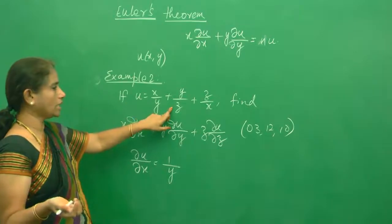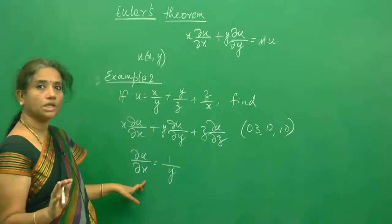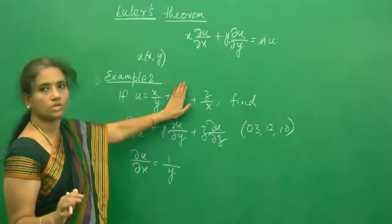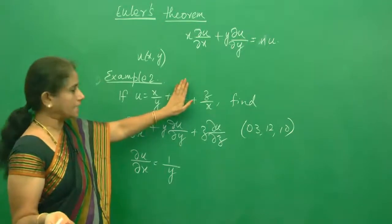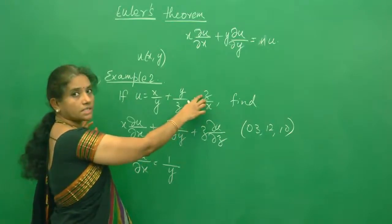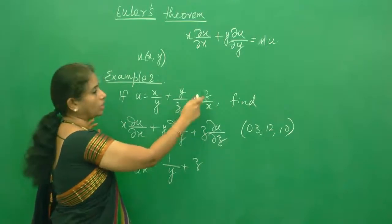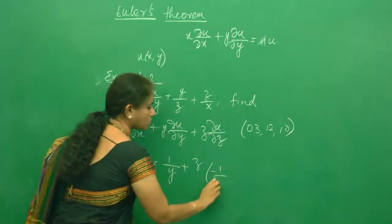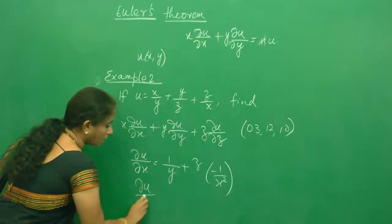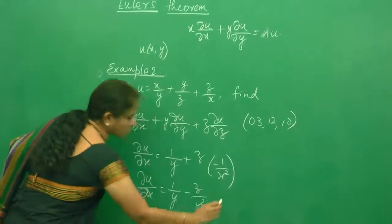And y/z — when differentiating with respect to x, y and z are both constants, so the derivative of this is 0. For z/x, z is a constant, and 1/x derivative is minus 1/x squared. So ∂u/∂x equals 1/y minus z/x squared.